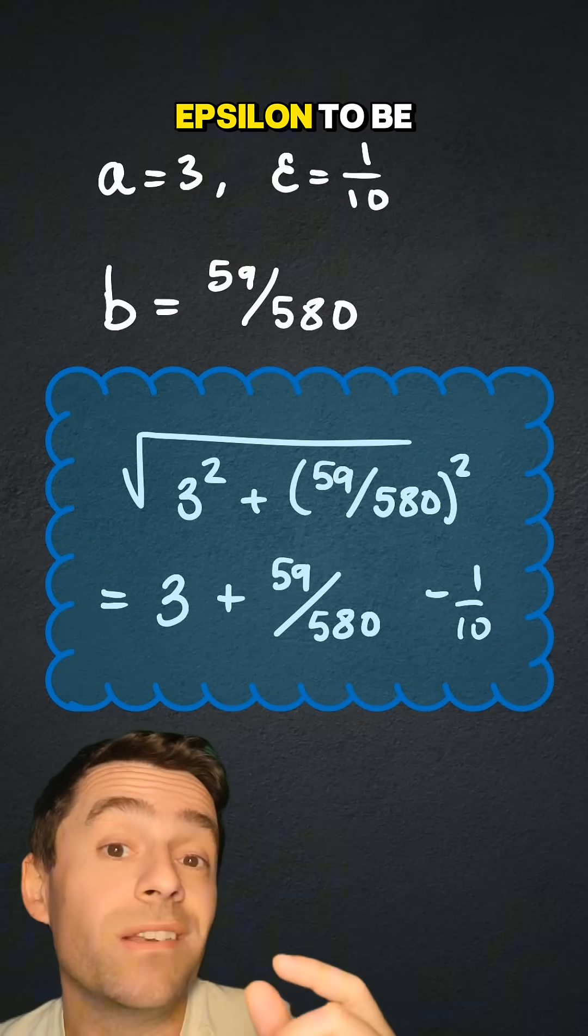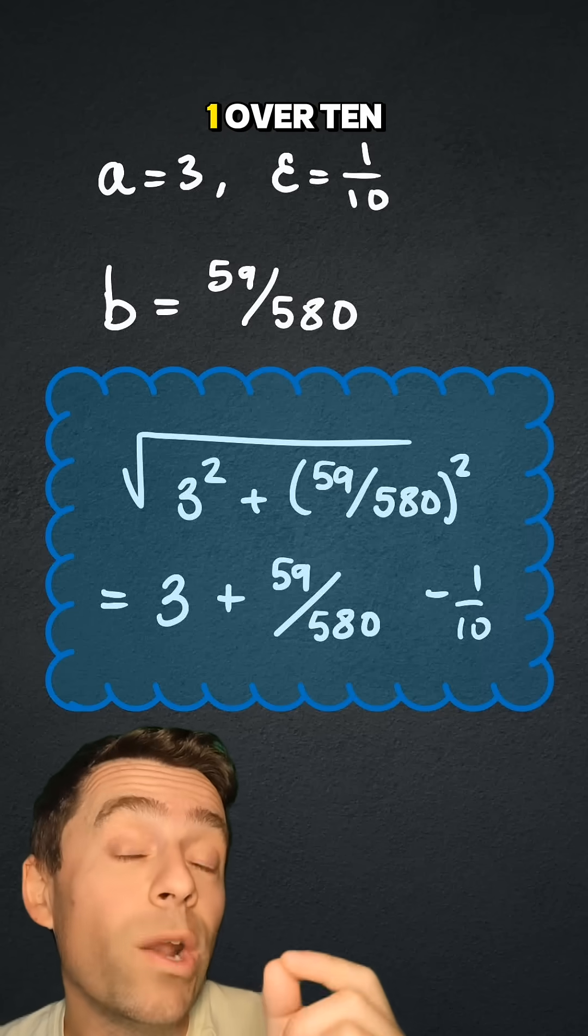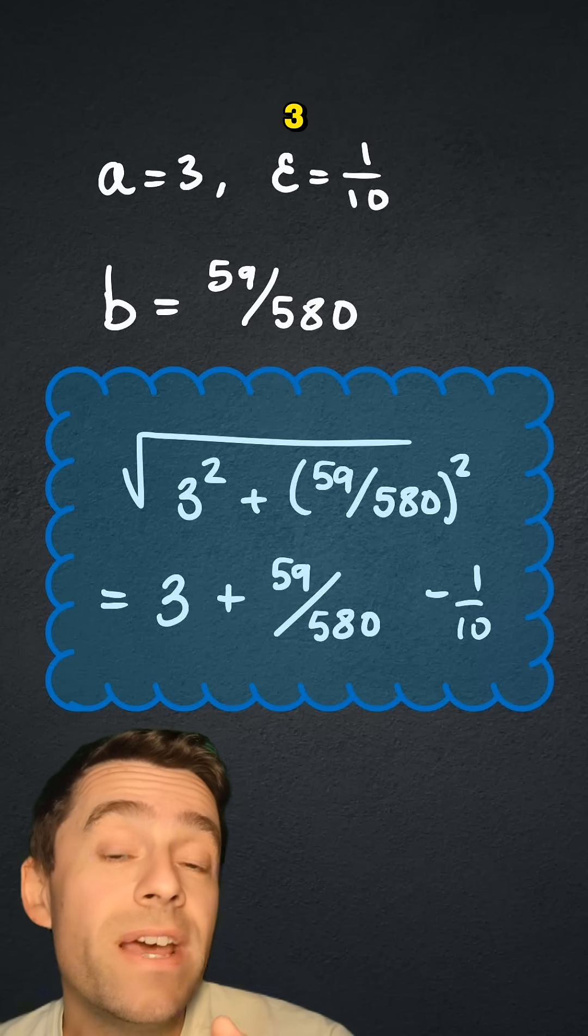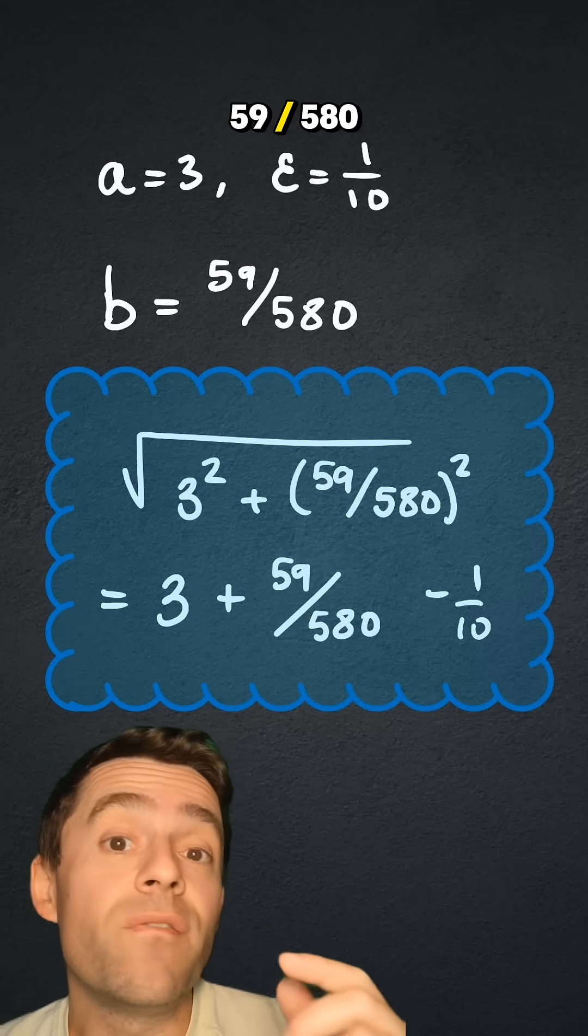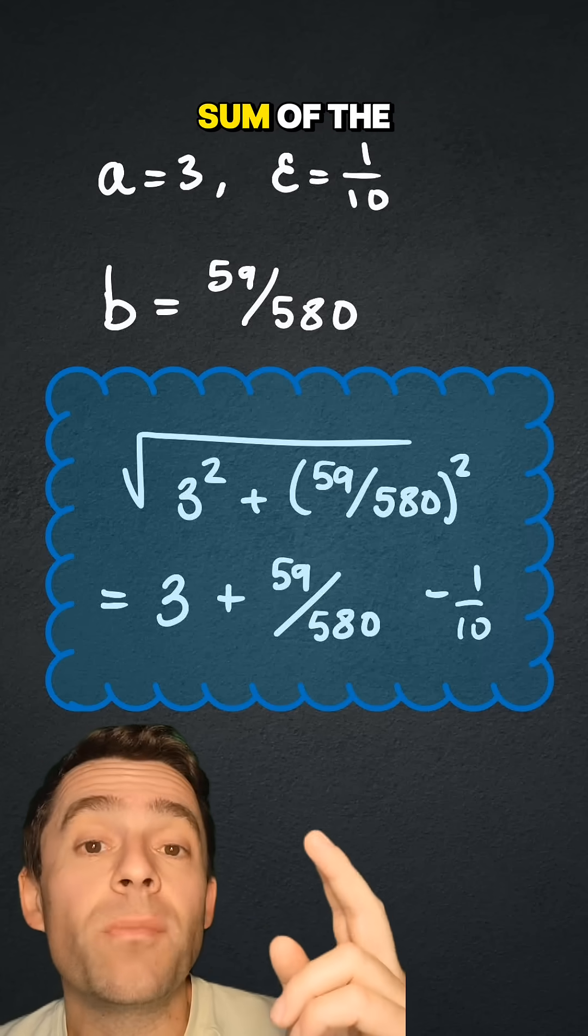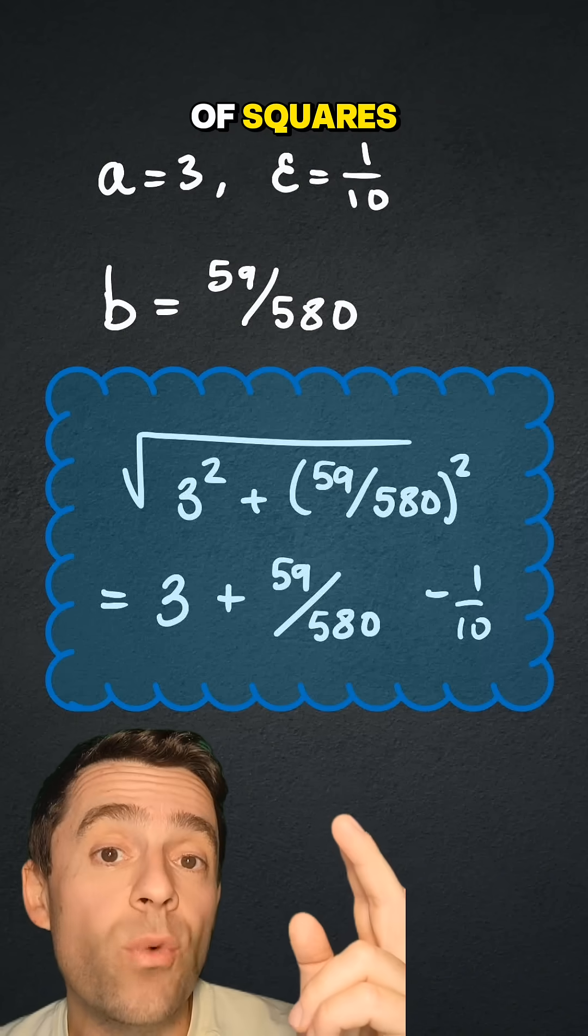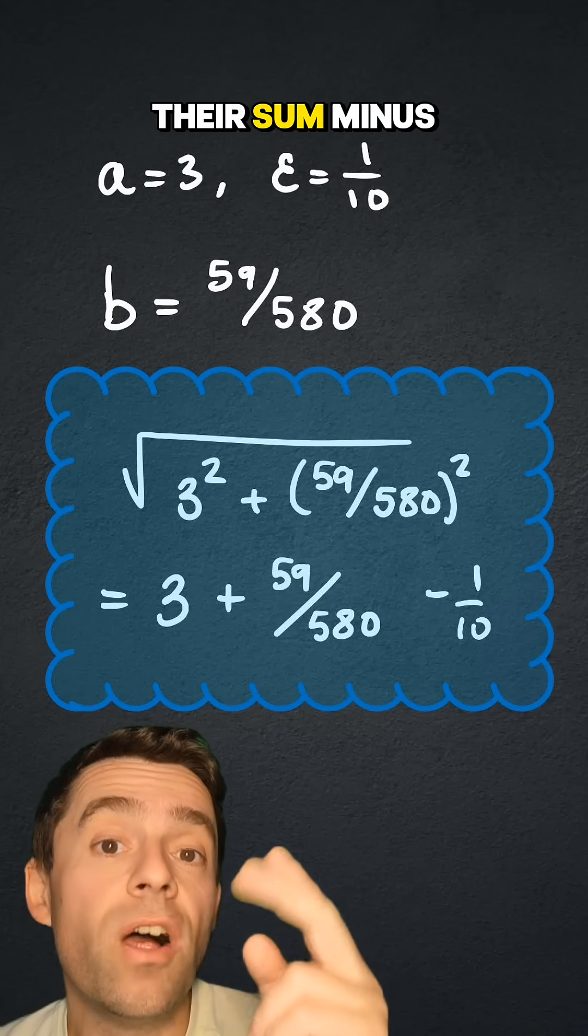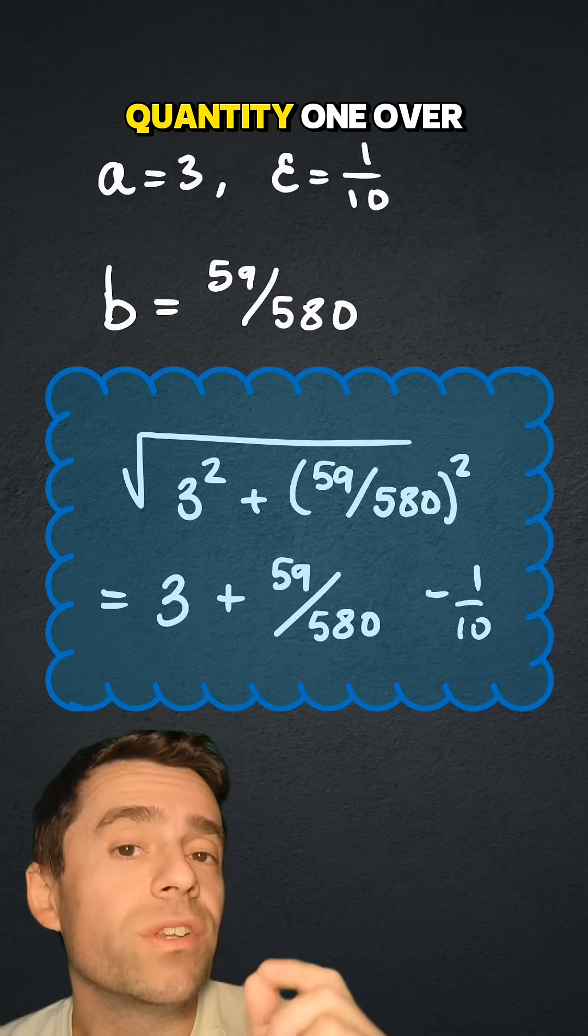Or for example, if I want epsilon to be very small, to be just 1 over 10, and a is 3, then b is going to be 59 divided by 580, and again, it works that their sum of the squares, the square root of their sum of squares is equal to their sum minus a very small quantity, 1 over 10.